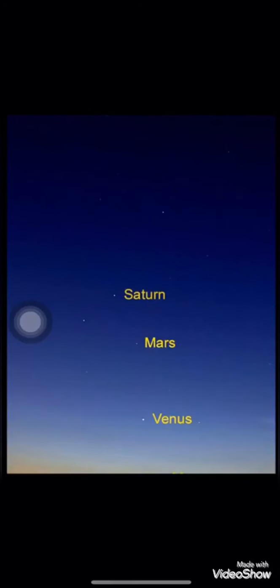We use a telescope to see things in the sky. A telescope makes things that are far away look closer or bigger. Saturn, Mars, and Venus are planets. Sometimes you can see these planets in the night sky.